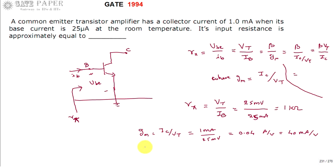That is gm value. And beta is ic by ib. So ic by ib is 1 milli ampere divided by 25 micro amperes. That is again 40.